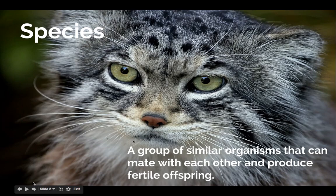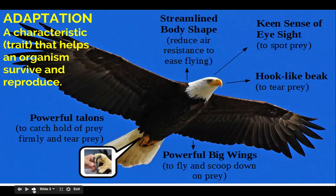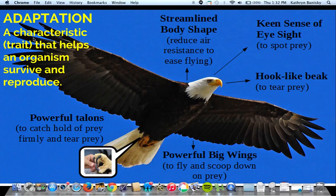Felis domesticus. Our next vocabulary word is adaptation — a characteristic or trait that can help an organism survive and reproduce. I got this image because I wanted to show there are so many adaptations on something like this bird of prey that would help it be a successful living thing. What's your favorite adaptation on this raptor?